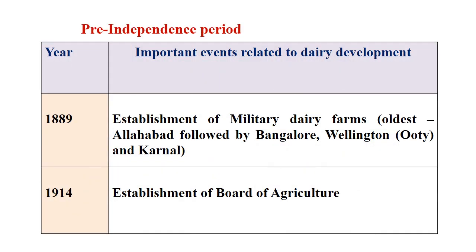We will briefly see the history of dairy development in India, beginning with the pre-independence period. As early as 1889, the first military dairy farms were established — the oldest one was in Allahabad, followed by Bangalore, then Wellington near Ooty in Tamil Nadu, and then Karnal. These were the beginnings for establishing dairy farms, basically for the supply of milk to the military — an effort taken by the British government at that time.